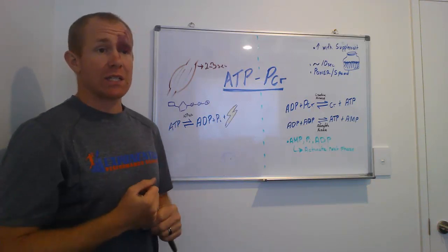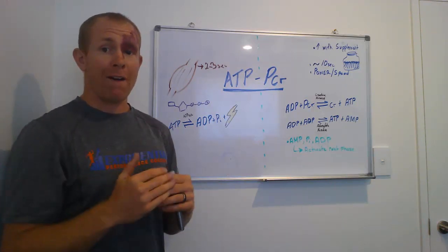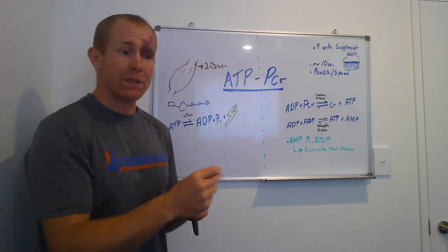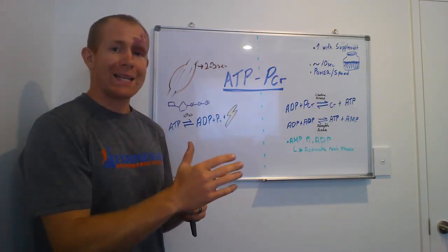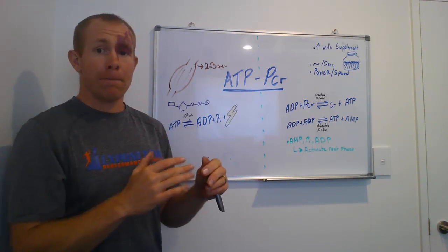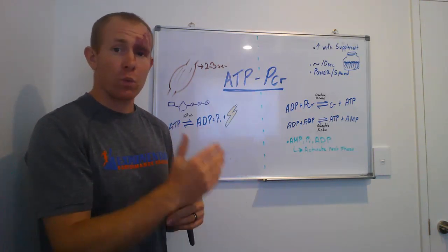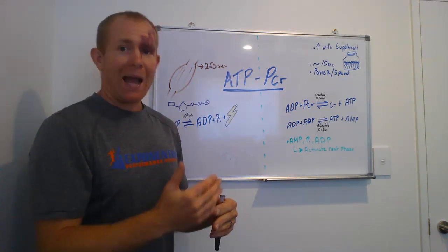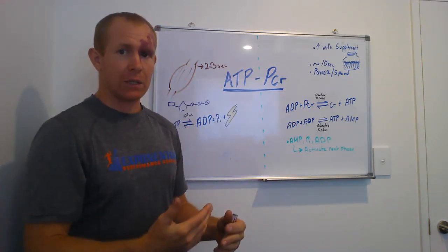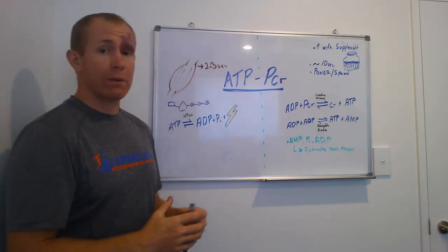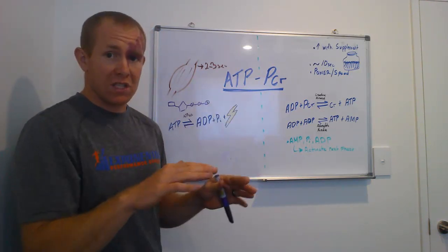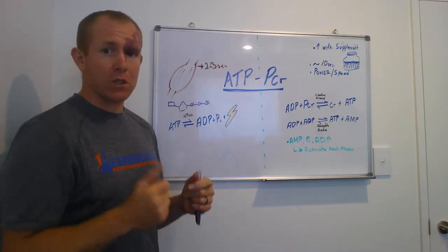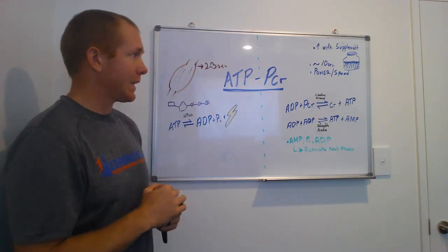Now, this energy system is responsible for all of our fast movements, but it also initiates all of our movements as well. And what that allows us to do is to move instantly without the reliance of oxygen. Once we get moving, our other energy systems kick into gear, and we move through into those more sustainable energy systems. But this instantaneous energy system allows us to spring into life, move if we need to.